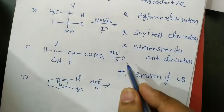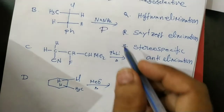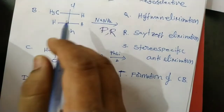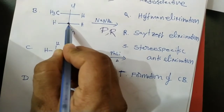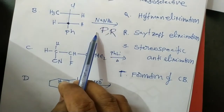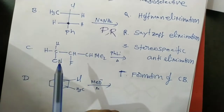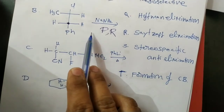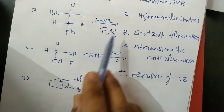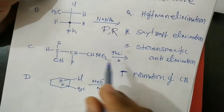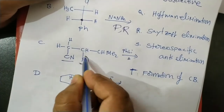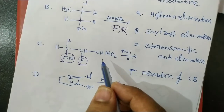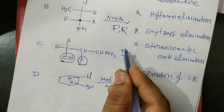So that means it is regioselective, and the Saytzeff product is major. It is not a stereospecific reaction because this carbon is not a chiral carbon. Any isomer can give the same major product. The conjugate base is not formed. So options P and R are selected.